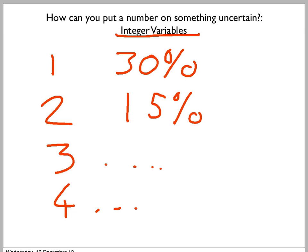So, for integer variables, it's very straightforward. You just list all the possibilities and the percentage chance of each of these possibilities. And that gives you the uncertainty.